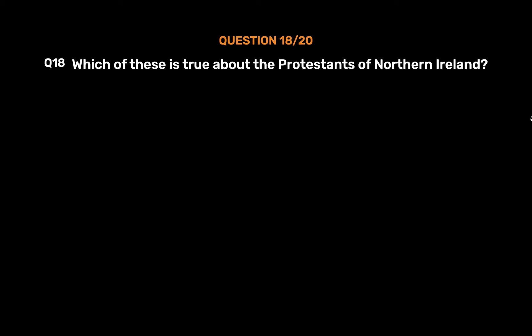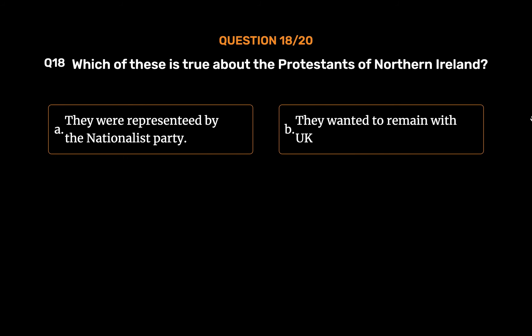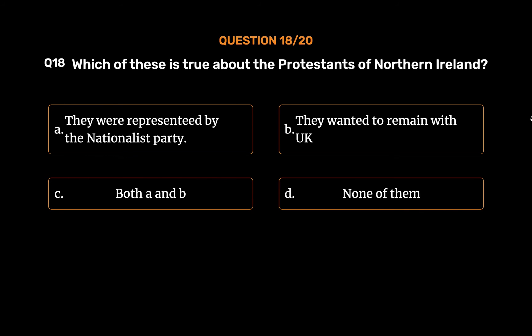Question number 18. Which of these is true about the Protestants of Northern Ireland? Option A: They were represented by the Nationalist Party. Option B: They wanted to remain with the UK. Option C: Both A and B. Option D: None of them.